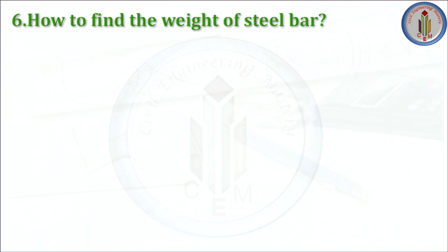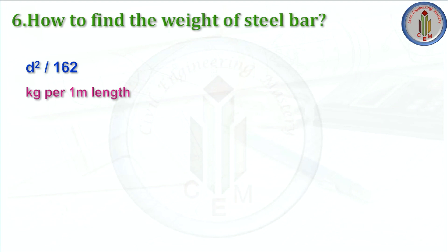How to find the weight of a steel bar? This is a very important question. Whenever we do any estimation, we need to find out the quantity of material required — how many kg or tons of steel is required for the construction of a building. The formula used to find the weight of the steel bar is d²/162, which gives kg per meter length. By multiplying the formula result with the running meters of steel, we get the weight in kg.